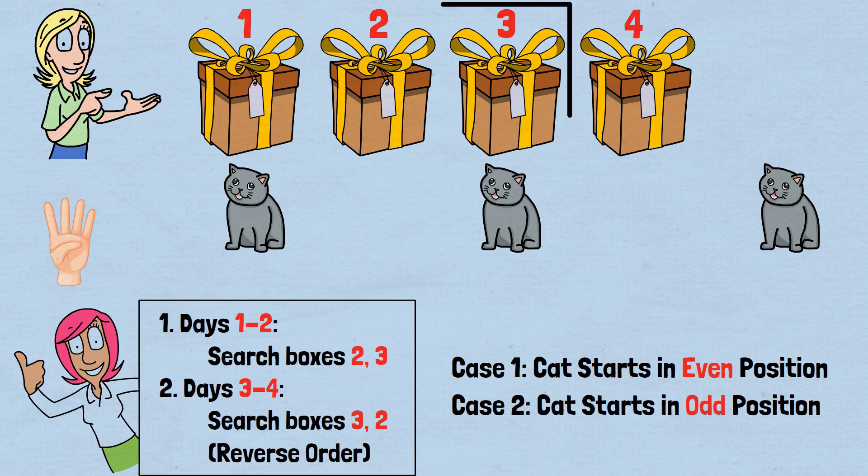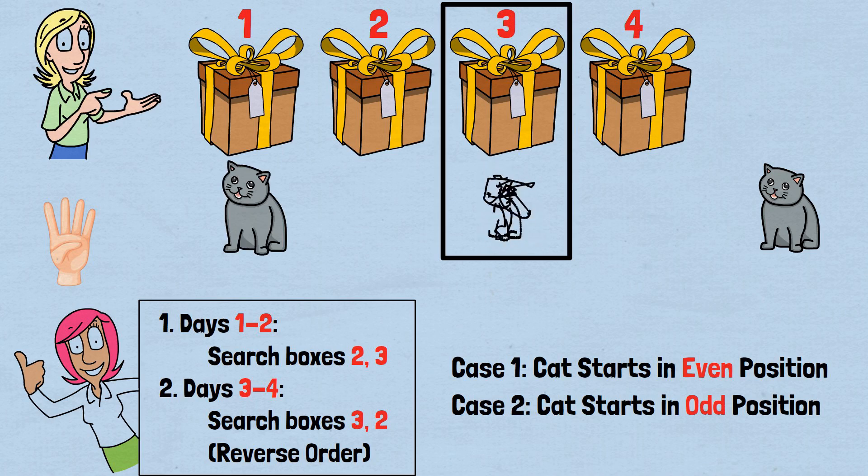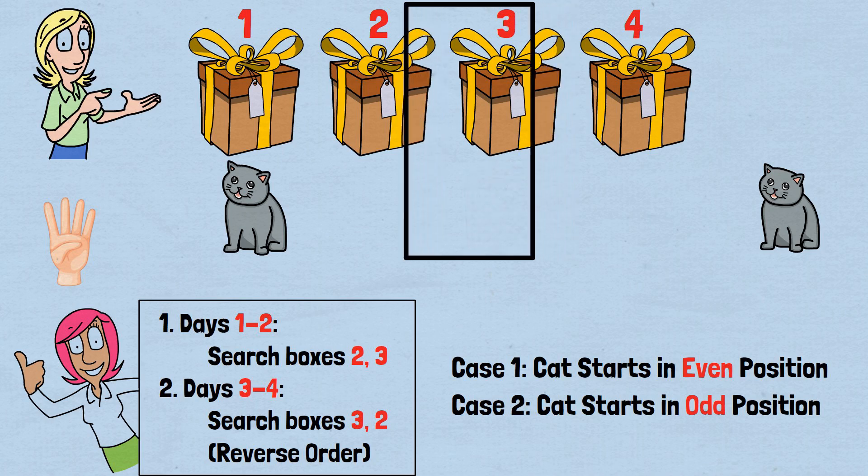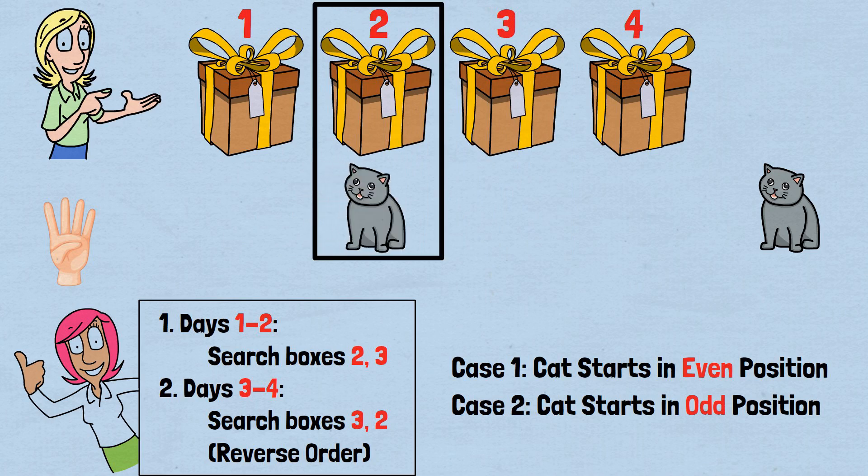Day 3: Search box 3. Cat is in odd position, 1 or 3. If cat is in box 3, victory. If not, cat is in box 1. Day 4: Search box 2. Cat moved from box 1 to box 2. Guaranteed victory. The reverse search pattern, 3-2, ensures we catch cats that started in odd positions.